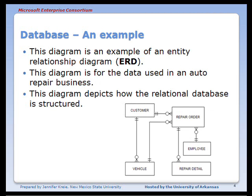Here's an example of an entity relationship diagram. This is for an auto repair business. This business needs to track information about customers, vehicles, repair orders, the detailed list of items in each repair order, and information about employees. The data model, the ERD, can be used as a blueprint for building a database. It can also be the documentation for how the database is actually constructed.